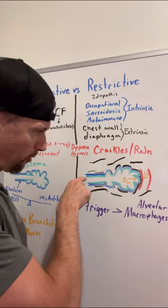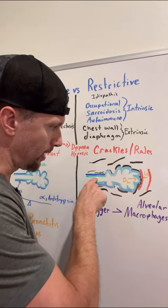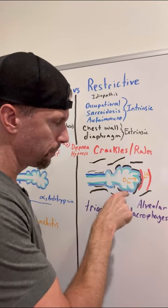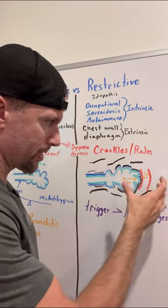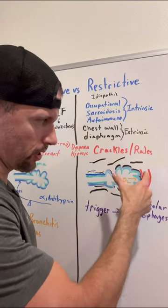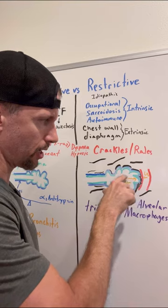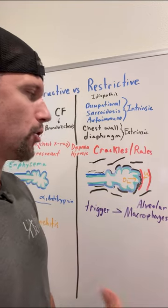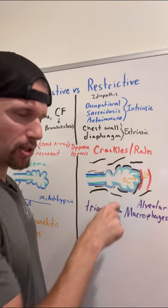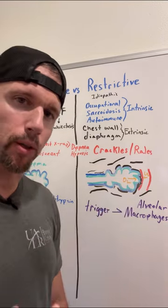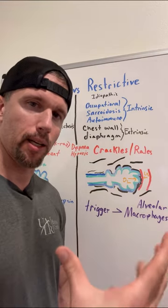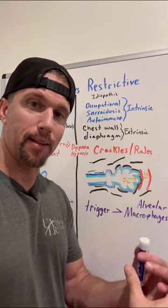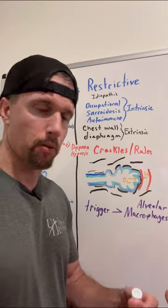If we have a bronchiole ending here into an alveolus, that's where gas exchange happens. Here's the capillary, here's the oxygen moving out. You have macrophages that reside in the alveolus that are typically sentinel cells waiting for bacteria or other pathogens to come in, and they'll present them.